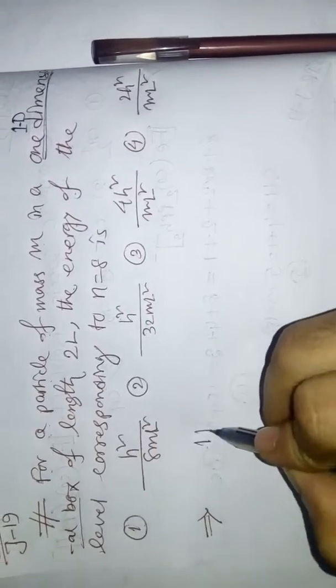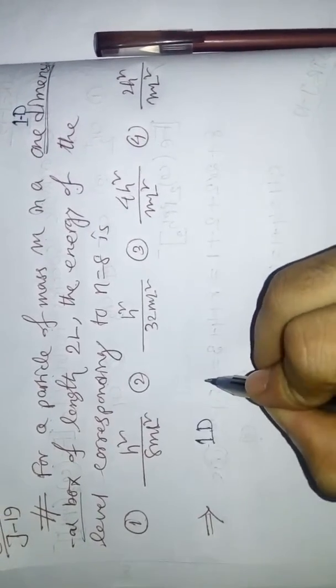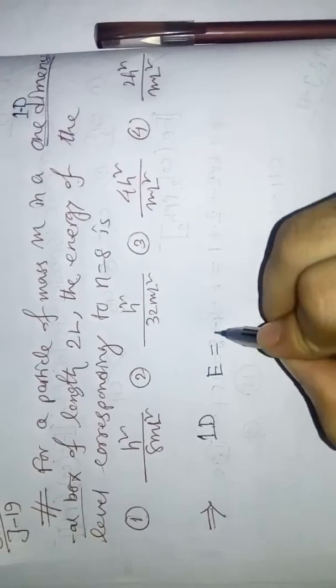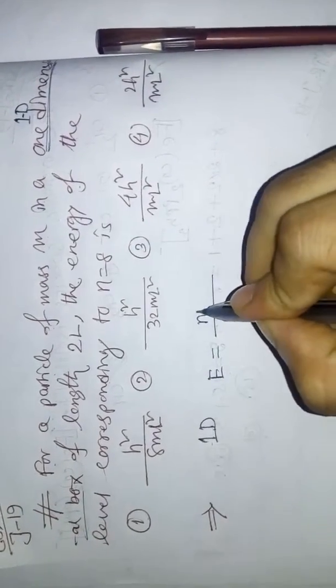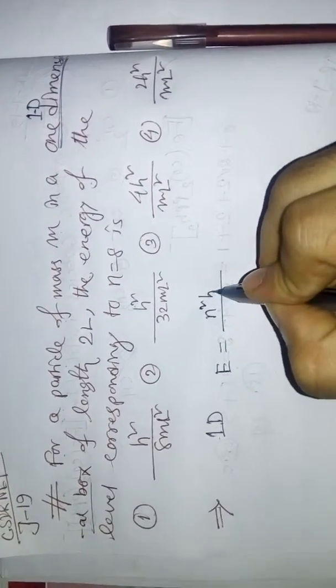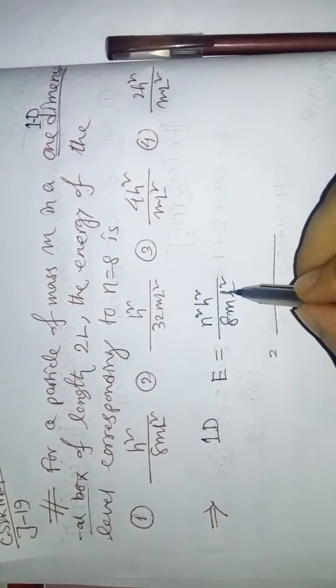For one dimension, all of you know this formula: E equal to n square h square divided by 8mL square. Now we have to see here, this L value how much? In this question the L value is 2L.